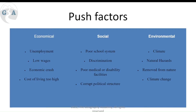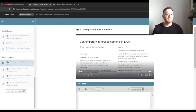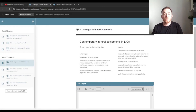Socially, we can see push factors like a poor school system, discrimination, poor medical facilities, and corrupt political structure. These can be along the lines of voluntary or involuntary. For example, a poor school system might mean someone wants to improve their standard of living — completely voluntary. Whereas discrimination or political issues could be more extreme, where people are forced to move out.